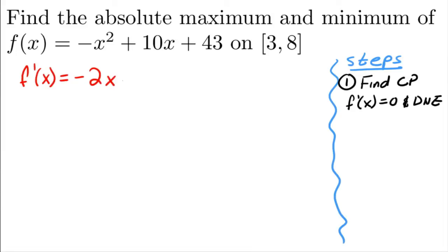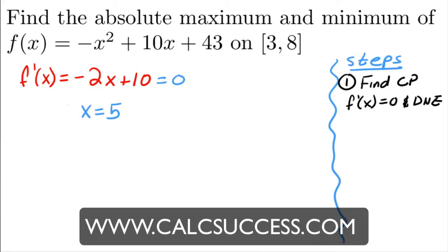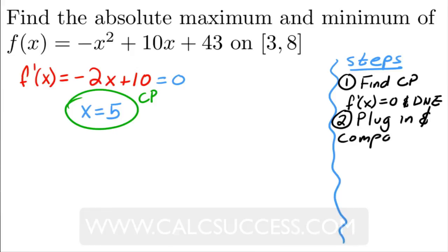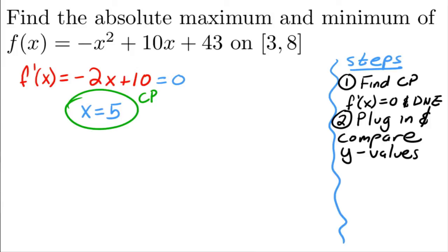The derivative is -2x + 10. We set it equal to zero. There's no spot where this is undefined, and we get x = 5. So this is the only critical point we have. The second step is to plug in and compare the y-values.